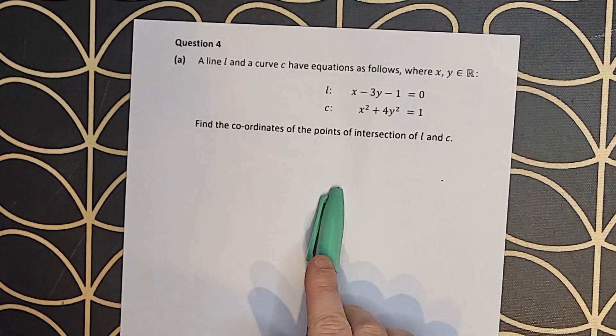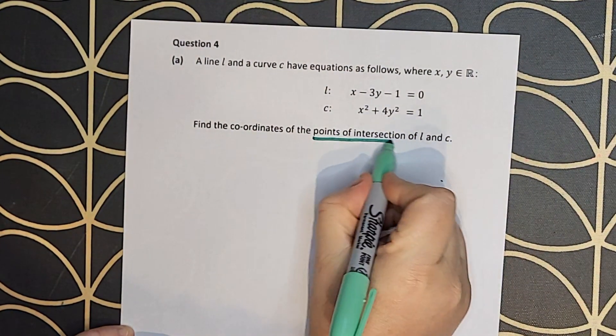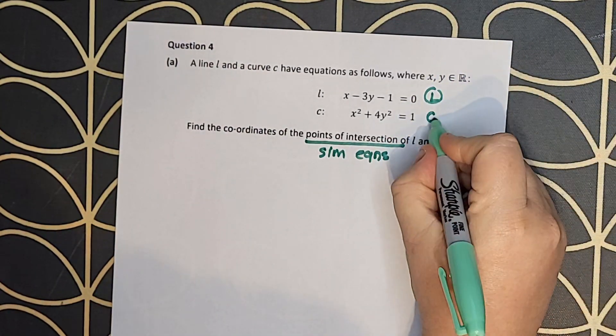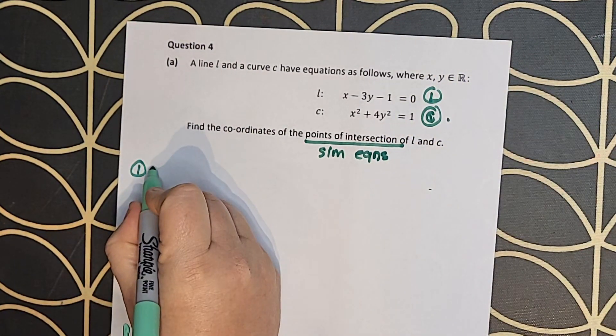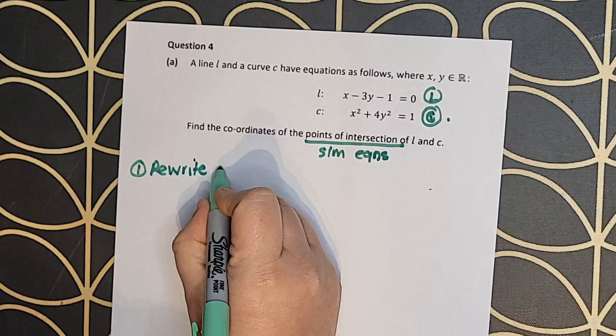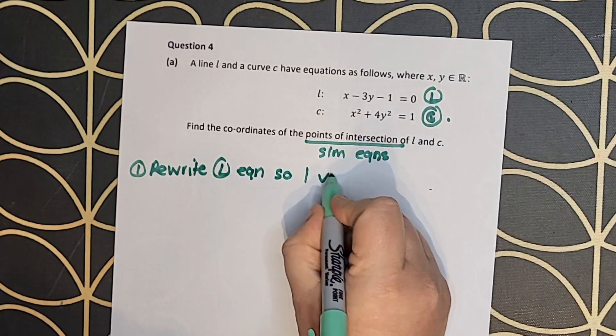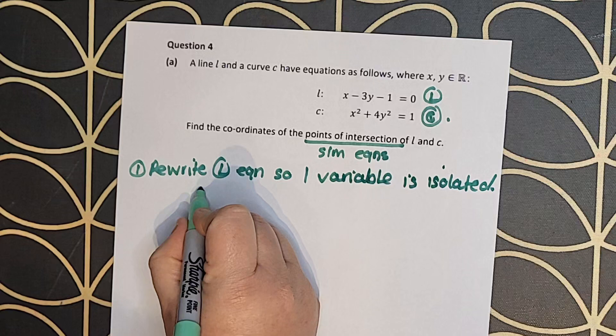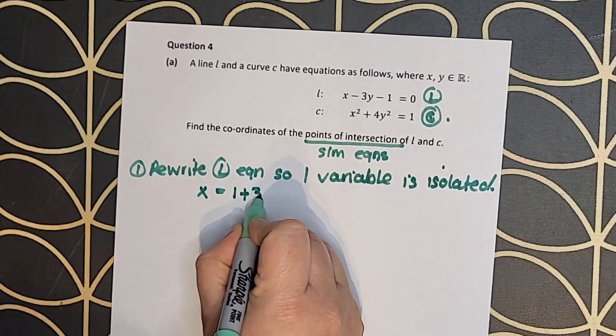Let's look at 2022 Leaving Certificate Higher Level Paper 1 deferred question 4. In this question we have line L and line C, and we're asked to get the points of intersection. You can clearly see that line L is linear and line C is quadratic, so we're going to use a substitution method with four steps.